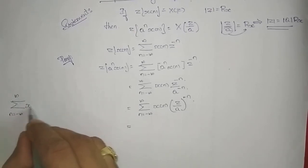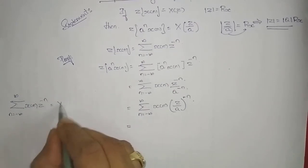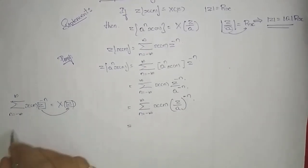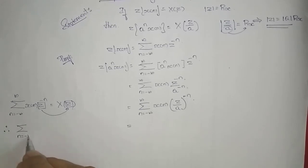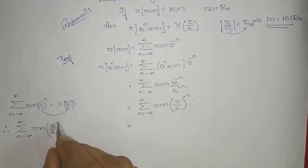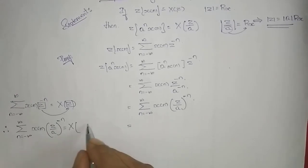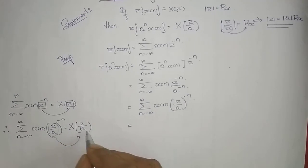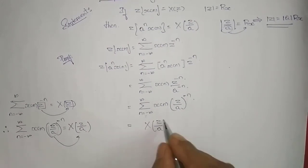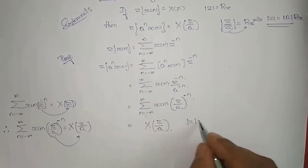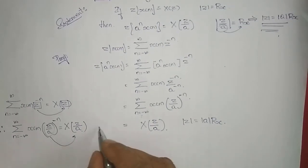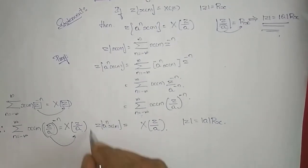Since summation n from minus infinity to infinity of x[n] · Z^(−n) equals X(Z), whatever is inside the bracket replaces Z. Therefore, the summation of x[n] · (Z/A)^(−n) becomes X(Z/A). So the Z-transform of A^n · x[n] is equal to X(Z/A), and the ROC becomes |A| · Rx, as we have shown.